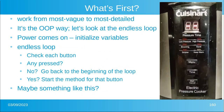So how do we attack this pressure cooker problem? You work from the most vague to the most detailed — this is the way we do object-oriented design and programming. Let's look at the endless loop: the power comes on, we initialize some variables, then we check the button. Did any get pressed? No — go back to the beginning of the loop. Yes — start the method for that button.